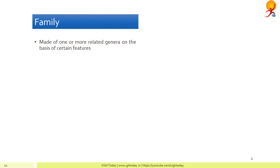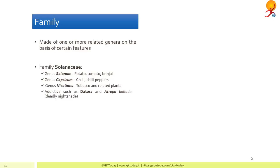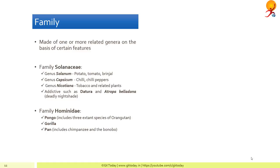A family is made of one or more related genera and is based on certain features. For example, the family Solanaceae includes genus Solanum (potato, tomato, brinjal), genus Capsicum (chili, chili peppers), Nicotiana (tobacco and related plants), and Datura or Atropa belladonna (nightshade) — these together form the family Solanaceae. Family Hominidae includes Pongo (orangutan), Gorilla, Pan (chimpanzees and bonobo), and Homo, which includes modern humans and our ancestors and relatives such as Neanderthals and Homo erectus.